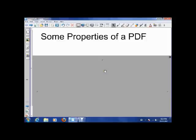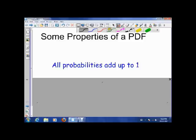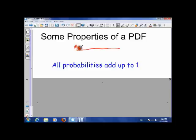Today we're going to talk about some properties of a probability distribution function and how we can work with them. The first property of a PDF is that all the probabilities have to add up to one. A PDF has every single possible outcome that could possibly happen. An example of a probability distribution function is the number of tails, where the possibilities were 0, 1, or 2.